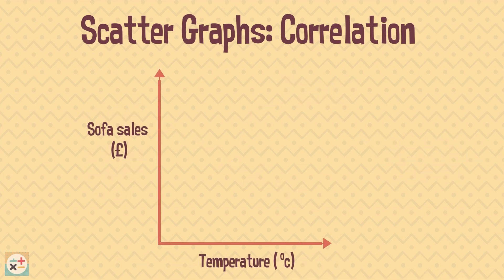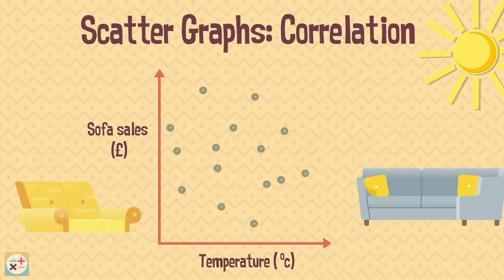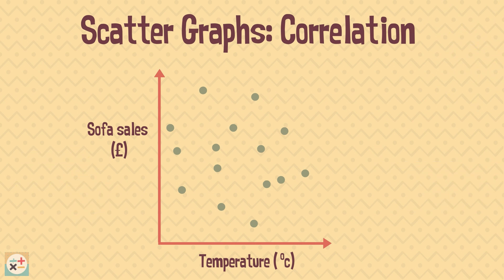What if the scatter graph looked like this? We can see that the sales of sofas has no obvious relationship to the temperature. We would say there is no correlation.